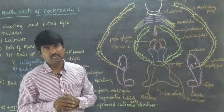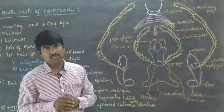Specific muscles will be present here: abductor muscles and adductor muscles. By the movement of these two muscles, mandibles will masticate the food into small pieces. Next is the first pair of maxillae.